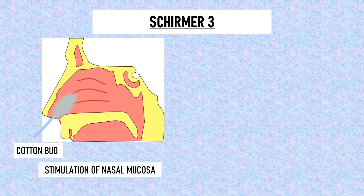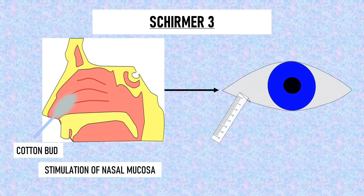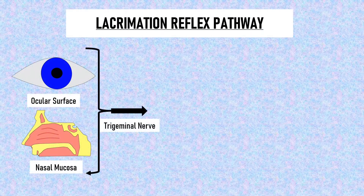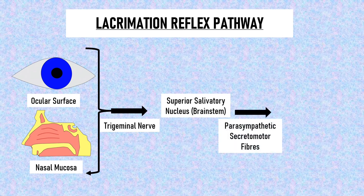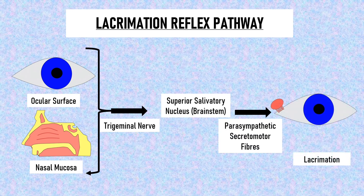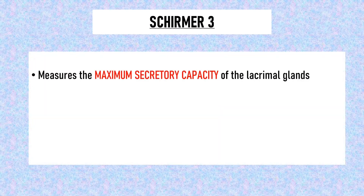In Schirmer 3, the nasal mucosa is stimulated with the help of a cotton bud at the level of the middle meatus, and the amount of wetting of the Schirmer strip placed in the lower fornix is measured. Neither the nasal mucosa nor the ocular surface is anesthetized prior to stimulation. The principle is that afferent fibers from the ocular surface as well as from the nasal mucosa are both carried by the trigeminal nerve; these signals converge in the superior salivatory nucleus of the brain stem and activate it. The efferent secretomotor fibers from the superior salivatory nucleus then innervate the lacrimal glands, inducing reflex tearing. Schirmer 3 thus measures the maximum secretory capacity of the lacrimal glands — the maximum amount of tears they are capable of producing.